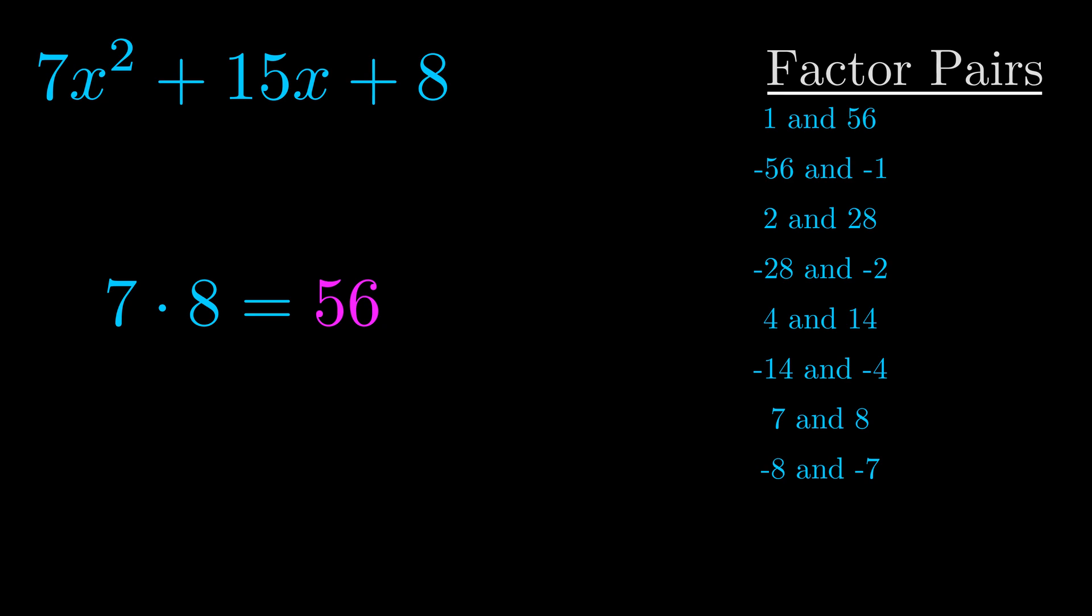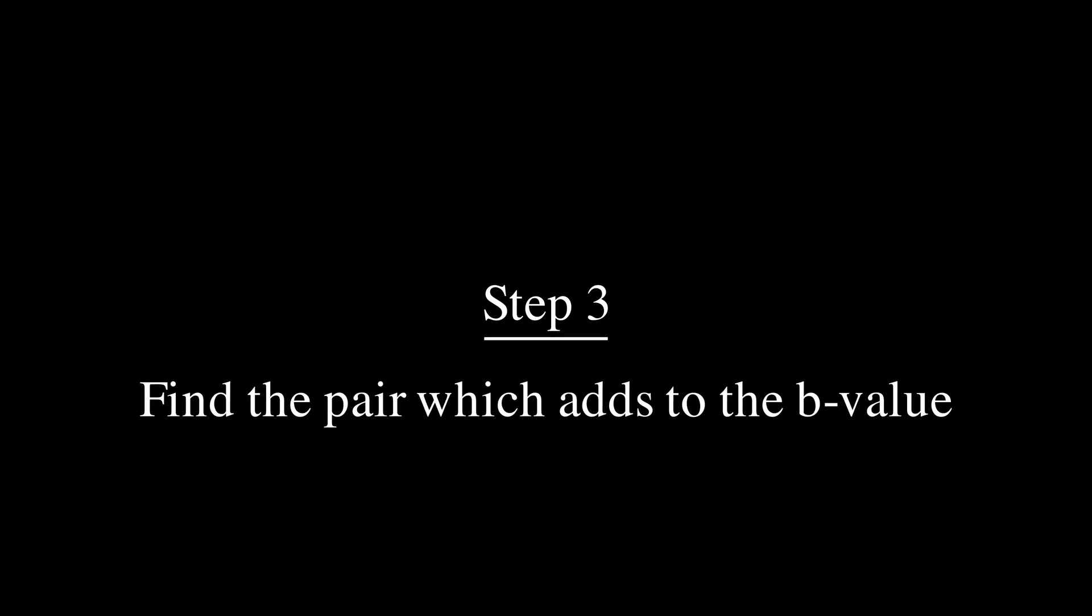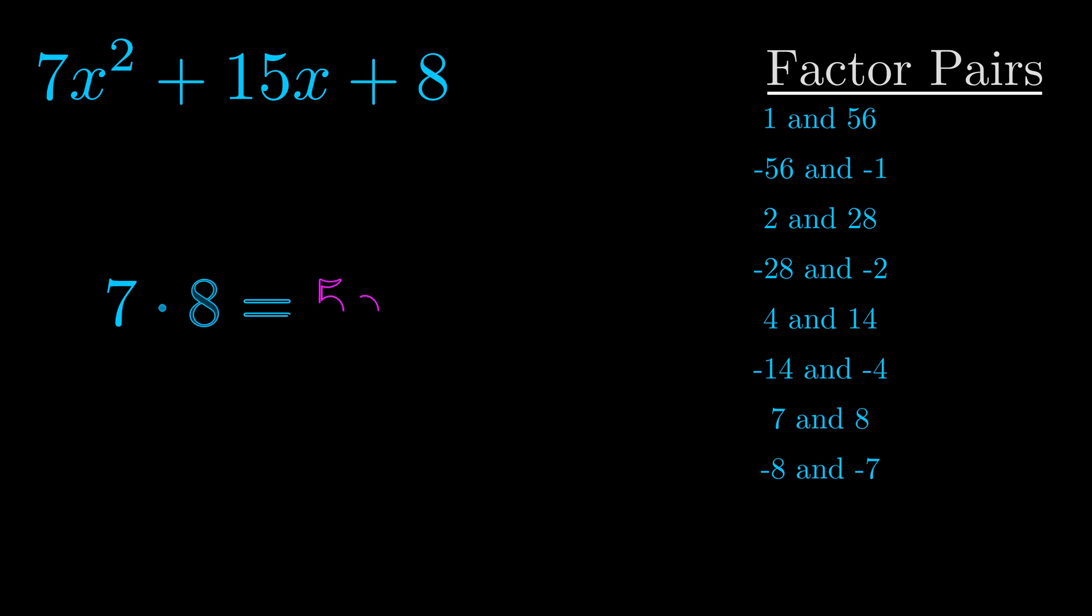Now once you have these factor pairs the goal is to find which of these pairs adds to the b value. The b value is the coefficient on the x term. That's the middle term, the one that we haven't done anything with yet. And really this is the only factor pair that we need.